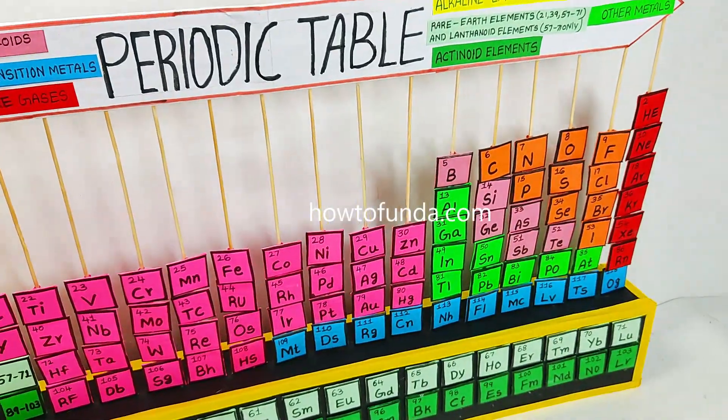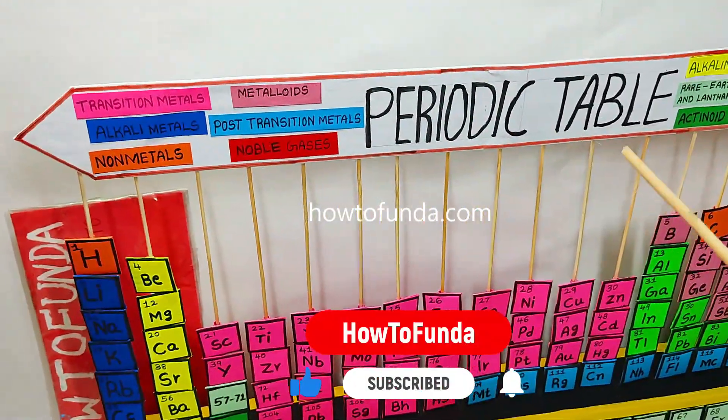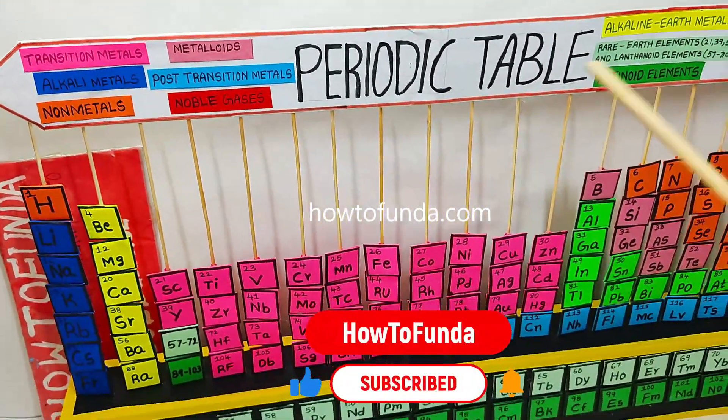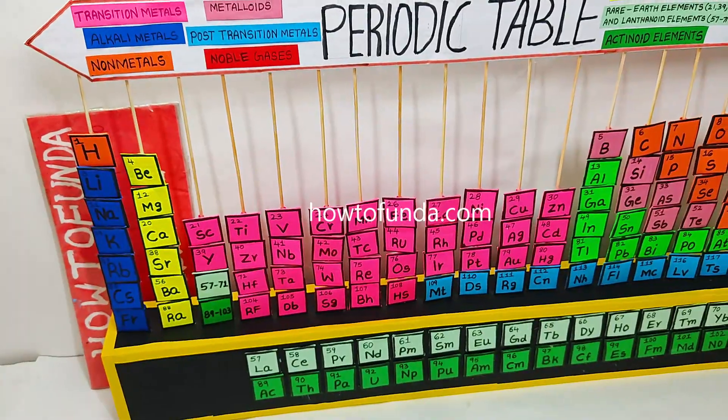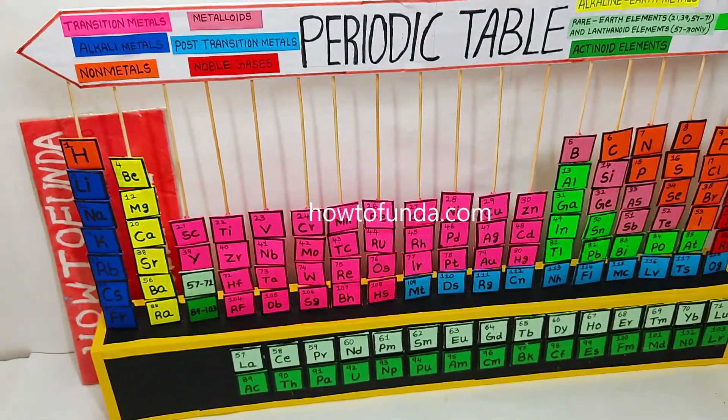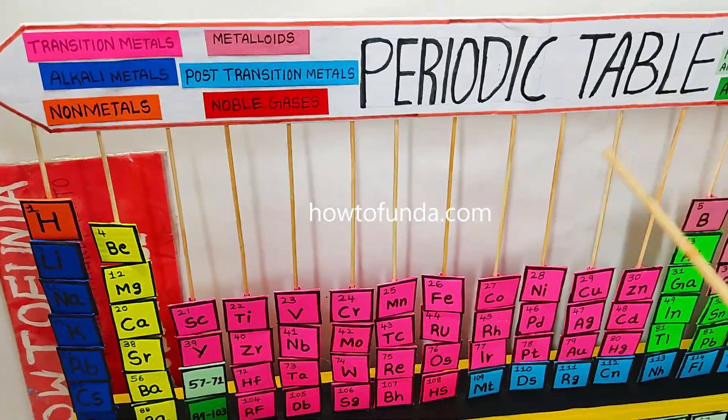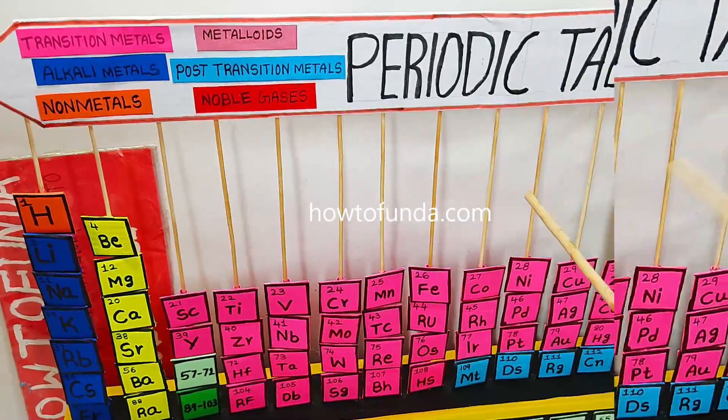Basically, let us understand what is a periodic table. The periodic table is a chart that organizes all known chemical elements based on their atomic number, electronic configuration, and chemical properties.